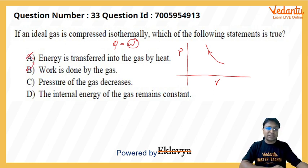Option C: pressure of the gas decreases - again wrong. We can see that the pressure has increased. Option D: internal energy remains constant.